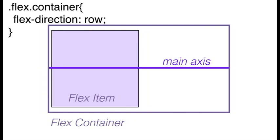Flex-direction specifies how the flex items will be laid out within the flex container. Rows are laid out horizontally and columns are laid out vertically. Flex items are aligned along a main axis and sometimes also a cross axis. The cross axis is perpendicular to the main axis.